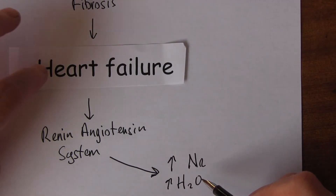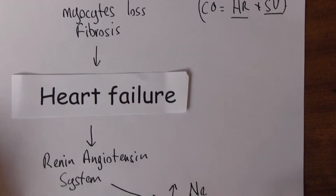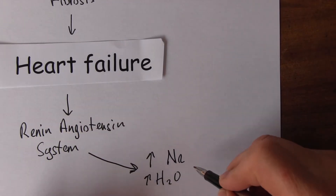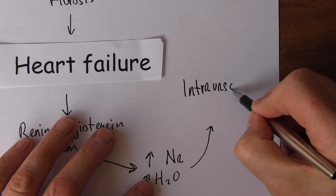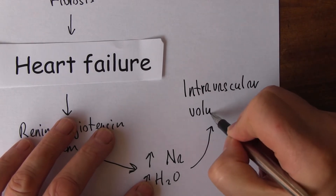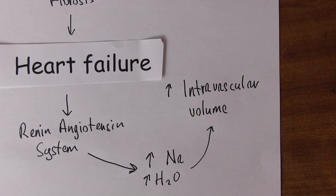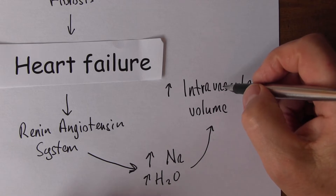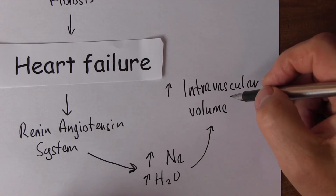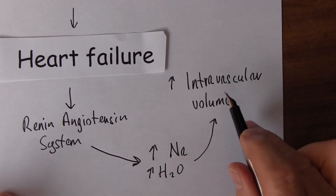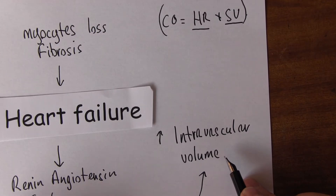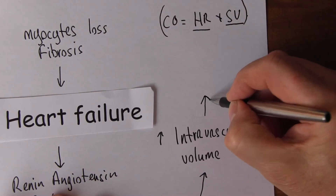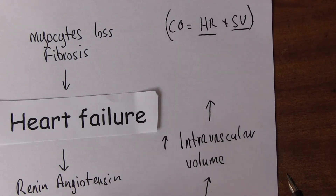We're not in normal physiology now — we have heart failure because of the myocyte loss and fibrosis. The increased sodium and water normally increases intravascular volume — the total volume of blood in the heart and blood vessels. Normally that's good, because you need an increased blood volume if cardiac output drops. But in heart failure, the increased intravascular volume increases the amount of blood returning to the heart, and via the Frank-Starling reflex, obliges the heart to work harder.